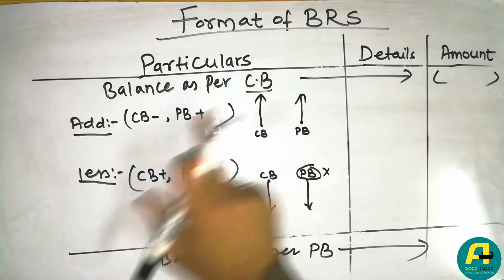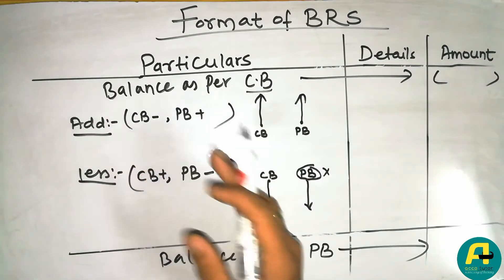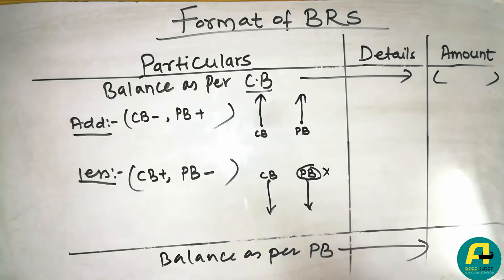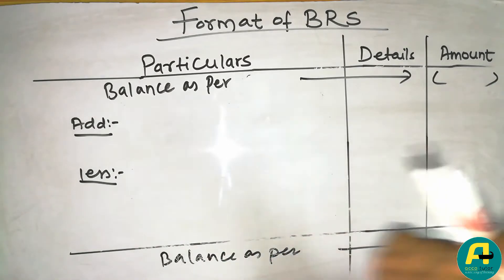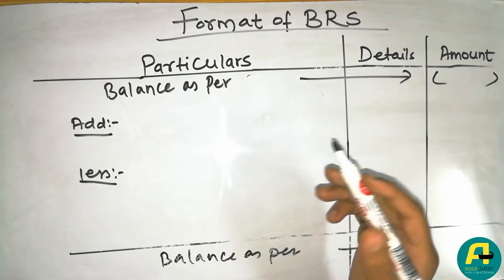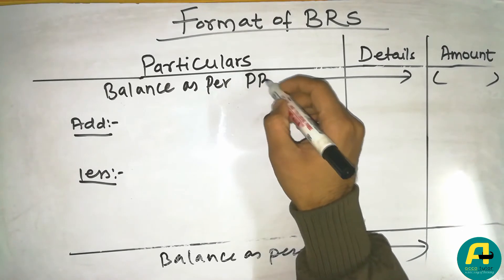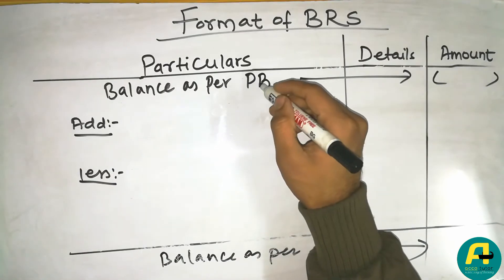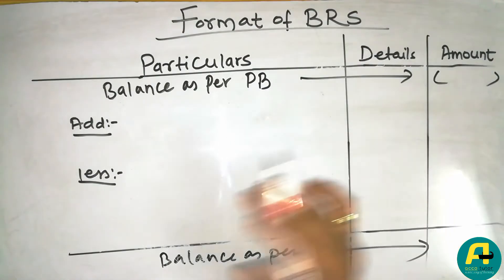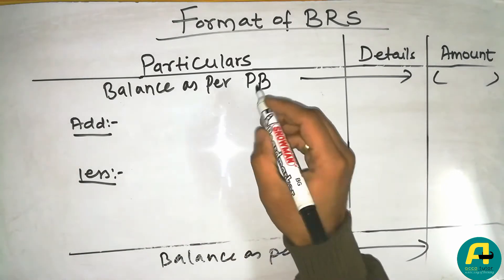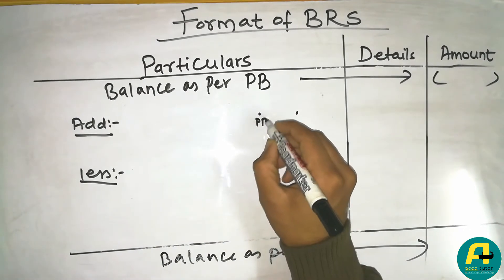In the opposite case — balance as per pass book — whatever is under 'less' in the cash book condition goes under 'add' in the pass book condition, and vice versa. In this cashbook condition, if cashbook balance is minus and pass book balance is positive, you should not change the cashbook balance — instead reconcile through the pass book.